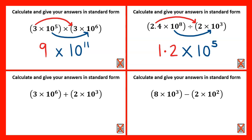Adding and subtracting with standard form is slightly different. There is a way of doing it by changing the powers so that they represent the same indices, but I've found this to cause quite a few problems and mistakes with pupils. So often the easiest way is just to write down what the numbers are and physically add them together before putting them back into standard form. Three times ten to the power of six is three million.